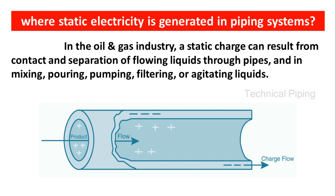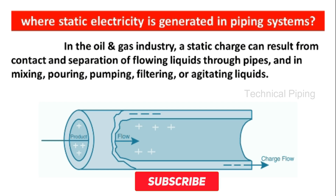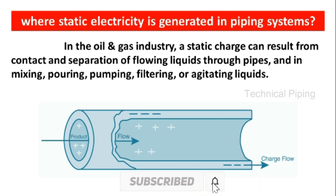While the liquid is in the pipe there is no danger, but when it passes into a tank or vessel, the charge remains in the liquid. If the liquid is highly conductive, the charge rapidly dissipates to earth through the metal shell, assuming it is effectively earthed or grounded. Where the liquid is not conductive — such as refined naphthas, kerosenes, and gas oils — the charge will remain in the body of the liquid for a longer time and can result in an incendive spark passing between the liquid surface and an earth component.